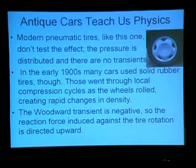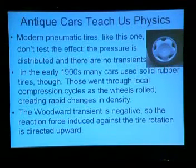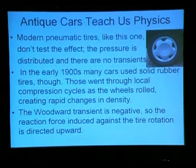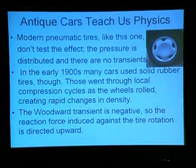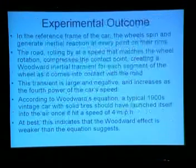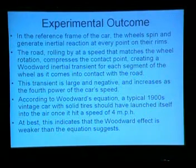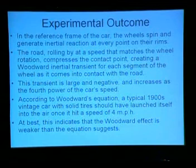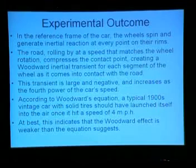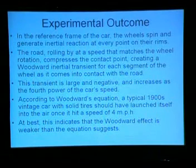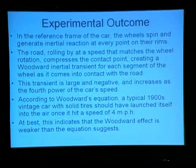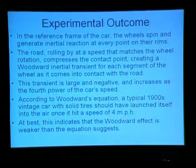Those do go through local compression cycles as the wheels roll, creating rapid changes in density. The Woodward transient works out to be negative, so the reaction force induced against the tire rotation is directed upward. In the reference frame of the car, the wheels spin and generate an inertial reaction at every point on their rims. The road rolling by at a speed that matches the wheel rotation — still using the car's inertial frame — compresses the contact point, creating a Woodward inertial transient for each segment of the wheel as it comes into contact with the road.